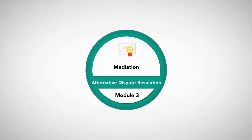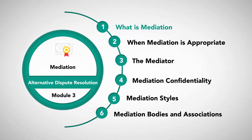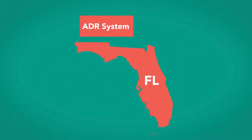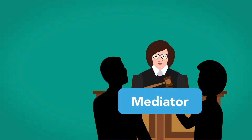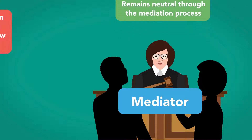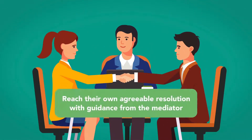Module 3: Mediation. What is mediation? As explained by the Florida Court ADR system, mediation is a way for people who are having a dispute to talk about their issues and concerns and to make decisions about the dispute with the help of another person. This third party is called a mediator and remains neutral throughout the mediation process. A mediator does not take either side in the dispute and typically does not tell the parties how to resolve their conflict. The point is for participants to reach their own agreeable resolution for all or some of their concerns with guidance from the mediator.